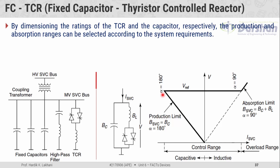By dimensioning the ratings of the TCR and the capacitor respectively, the production and absorption ranges can be selected according to the system requirements. The limits on the capacitive and inductive regions depend on the ratings of the inductive and capacitive elements, and the magnitude of the firing angle of the antiparallel connected thyristor pair. The FCTCR extends the volt ampere reactive range in the leading power factor compared to using only a thyristor controlled reactor.